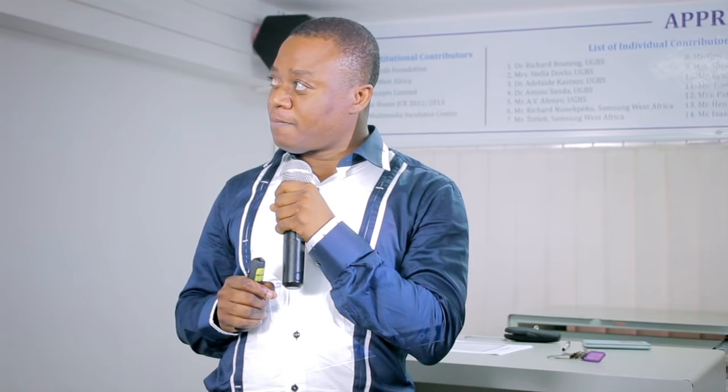Let's look at the overview. The first point is practical applications of normality. We said ages are normally distributed on average, income is normally distributed, height is normally distributed, weight is normally distributed. Many things in life are normally distributed. But life is not a straight line — some things are not normally distributed, and when that happens, we say the data is skewed.